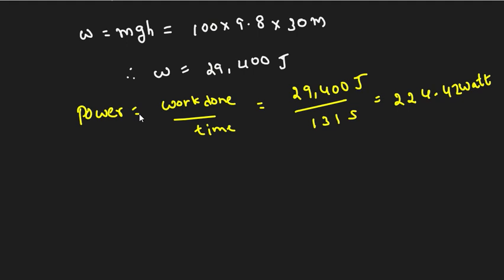To convert to horsepower: 1 horsepower equals 746 watts. So horsepower equals power divided by 746. Therefore, 224.42 divided by 746.